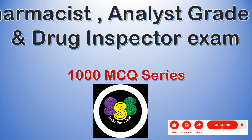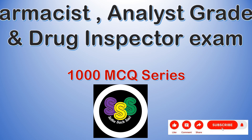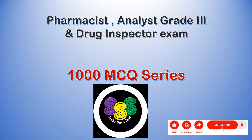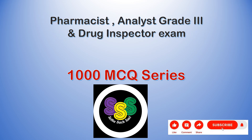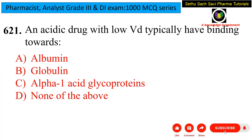Hello everyone, welcome to the Thousand MCQ Series for Pharmacist Analyst and Drug Inspector Exam. Let's start with the first question: an acidic drug with low VD typically has binding towards which protein? Is it albumin, globulin, alpha-1 acid glycoprotein, or none of the above?